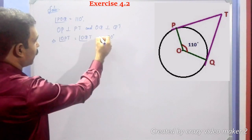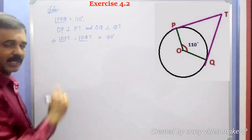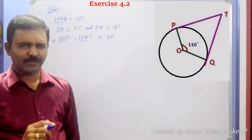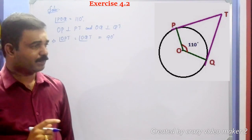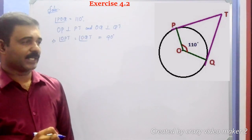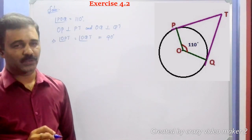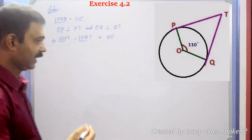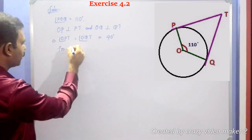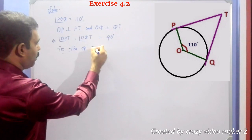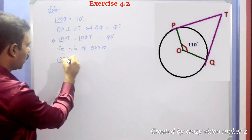So angle OPT equals 90 degrees and angle OQT equals 90 degrees. We know that in any quadrilateral the sum of the internal angles is 360 degrees. In the quadrilateral OPTQ, angle POQ plus angle OPT plus angle PTQ plus angle OQT equals 360 degrees.